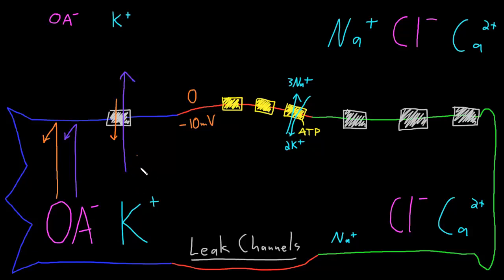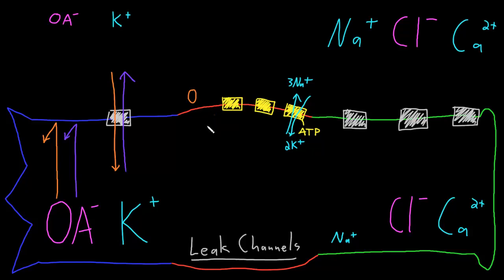As potassium ions leave the neuron, carrying their positive charges out, that makes the inside of the membrane more negative — the membrane potential gets bigger with each potassium ion that leaves. This continues until the membrane potential is big enough that the electrical force driving potassium in equals the diffusion force driving it out. When these forces are the same size and opposite in direction, there is no net movement of potassium ions. For potassium at typical neuron ion concentrations, this might occur around negative 70 millivolts, which is more than enough for the neuron to function.